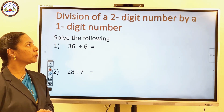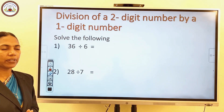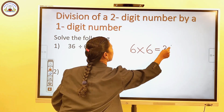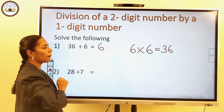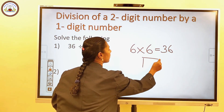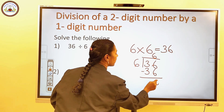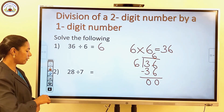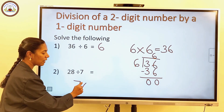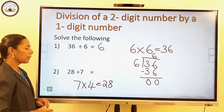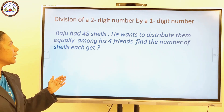Next is division of a 2-digit number by a 1-digit number. 36 divided by 6 equals blank. From the multiplication table, we know 6 into 6 is equal to 36, so the division fact is 36 divided by 6 is equal to 6. Using long division, subtract and we get 0. Second question: 28 divided by 7 equals blank. From the multiplication table of 7, we know 7 into 4 is equal to 28, so 28 divided by 7 is equal to 4.